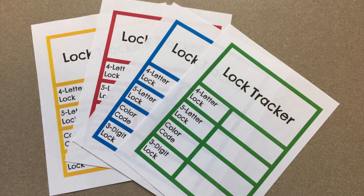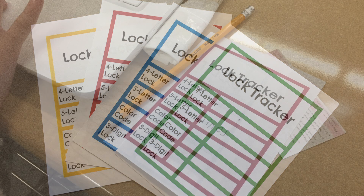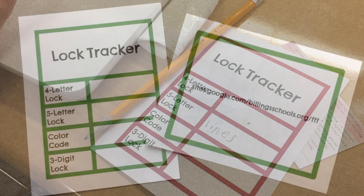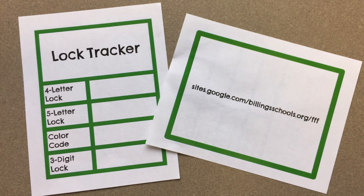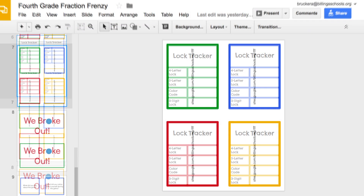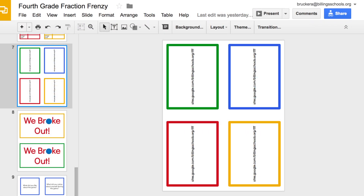If you're doing the printable version of the game, print multiple copies of the lock tracker, single-sided and just enough for each student to have one. If you're using the digital puzzles, print multiple copies of pages 6 and 7. This will be the lock tracker along with the website printed on the back.